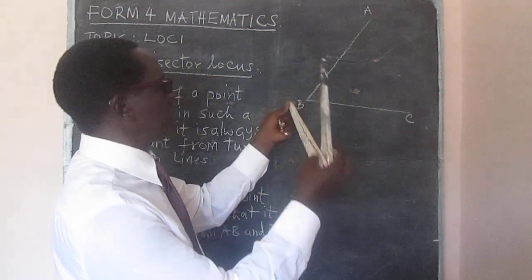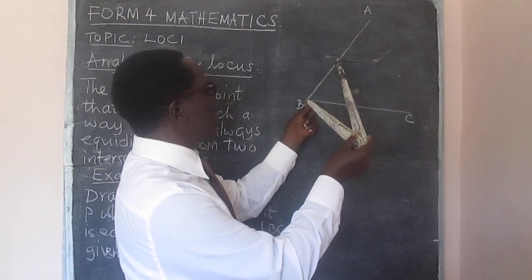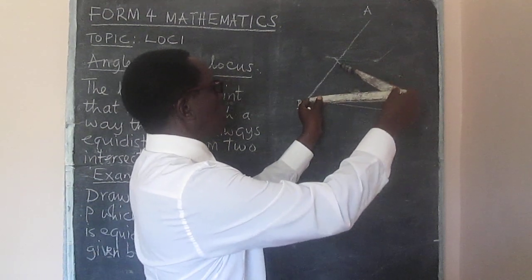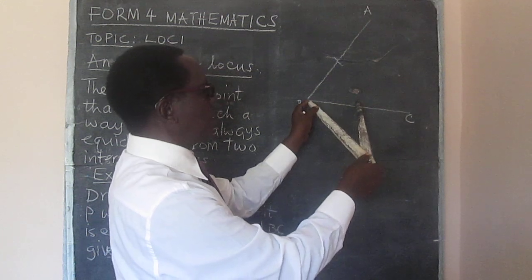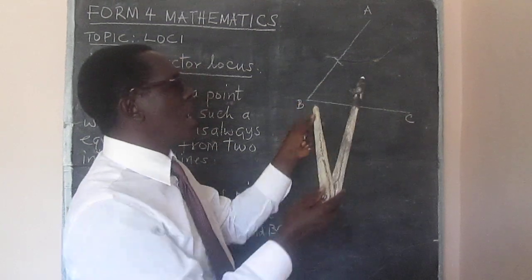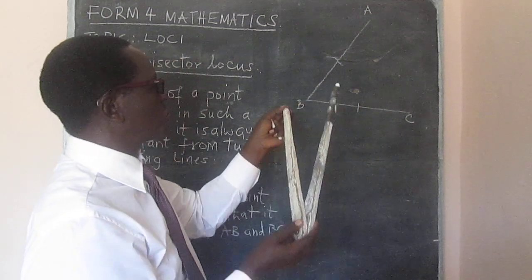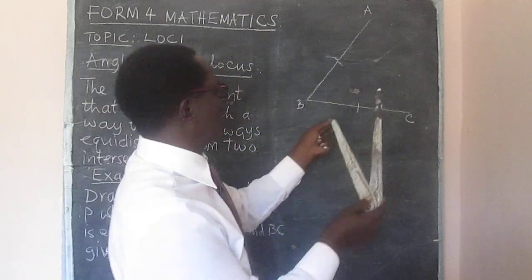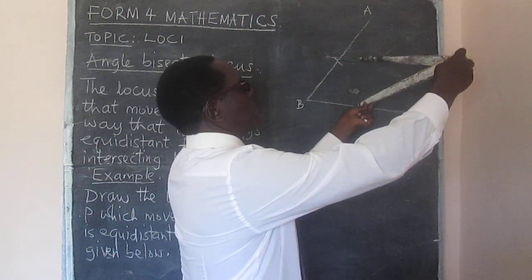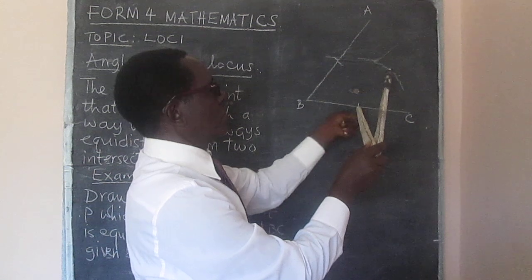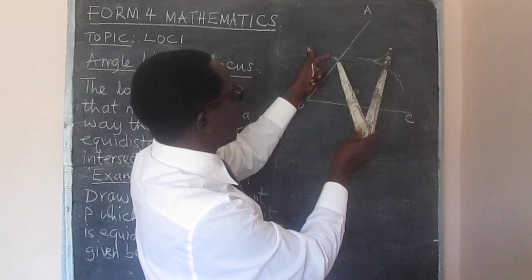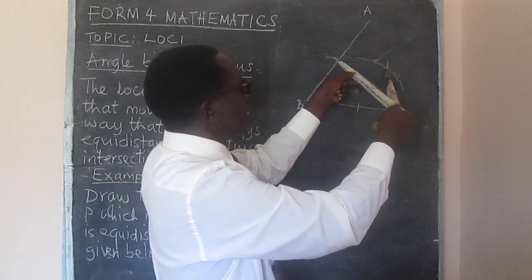Open up your pair of compasses to a given radius. With the sharp point at B, make an arc on AB. With the same radius, make an arc on BC. Now transfer the sharp point to one of the arcs that you've made and, using the same radius, strike another arc within the angle.